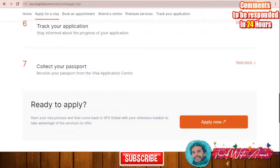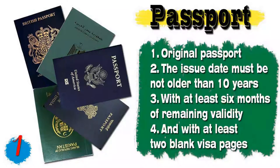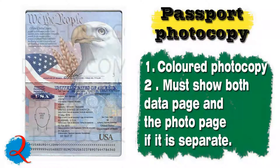Now let's talk about all the required documents for this visa. First, you will need your original passport. The issue date must be no older than 10 years, with at least six months of remaining validity and at least two blank visa pages for stamps. Second, you will need a photocopy of your passport — recommended to be in color — showing both the data page and the photo page.